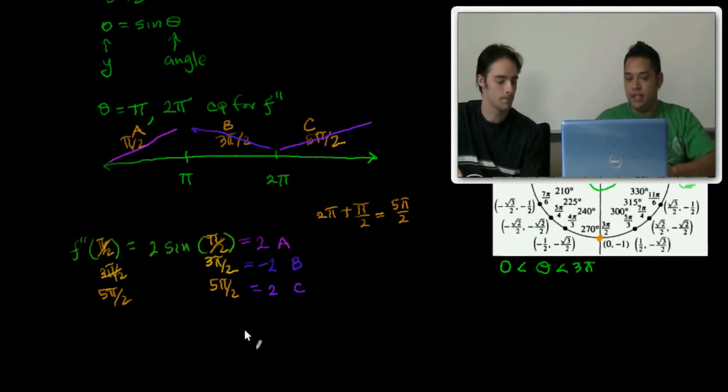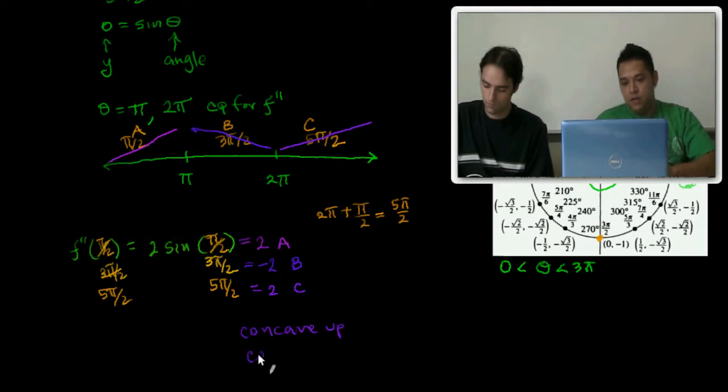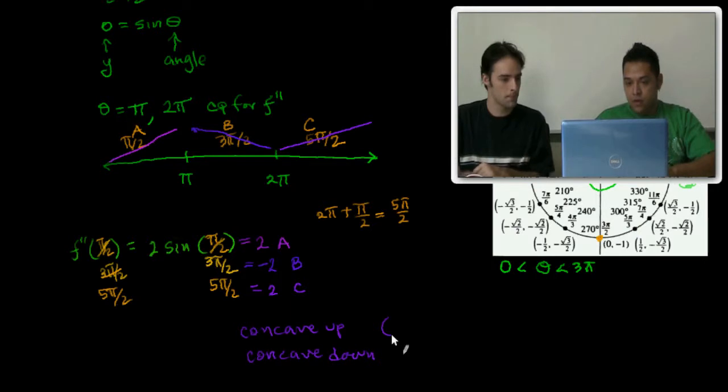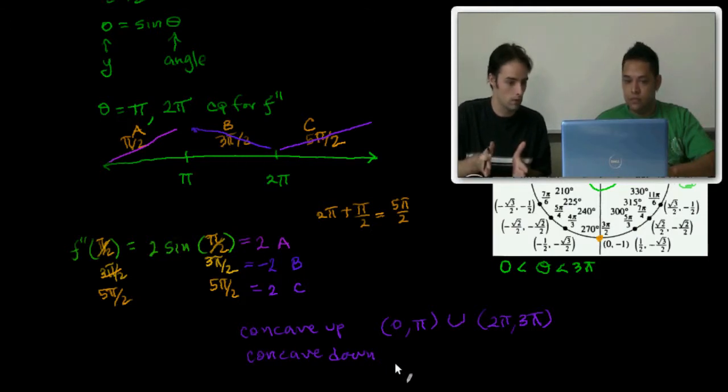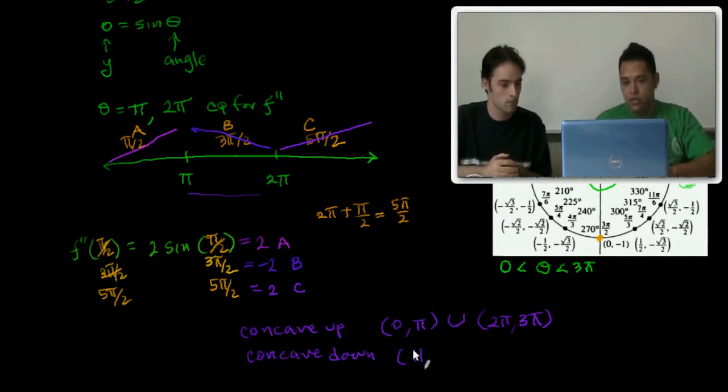Now, this is the intervals, right? Exactly. So we're concaving, concave up and concave down. What are the intervals where we concave up? We're going to be concave up from 0 to π, and the other interval for concave up is going to be from 2π to 3π. And when do we concave down? Just in between there, from π to 2π.